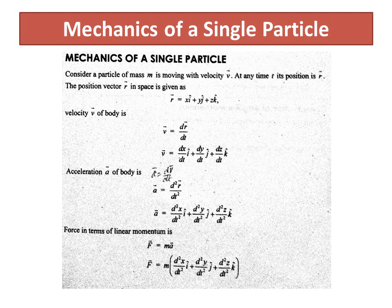Now that we have the position vector, velocity vector, and acceleration equation, multiplying mass M by the acceleration gives the final force equation: F equals M times the acceleration vector.